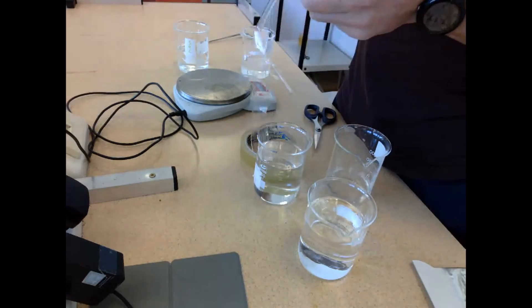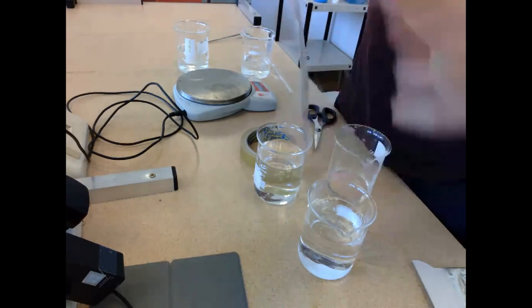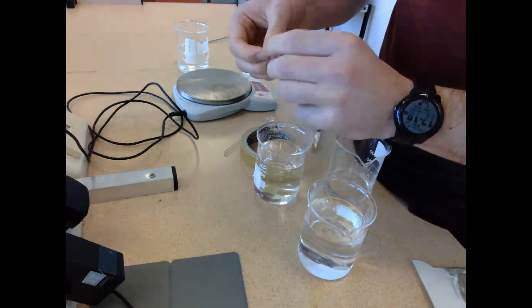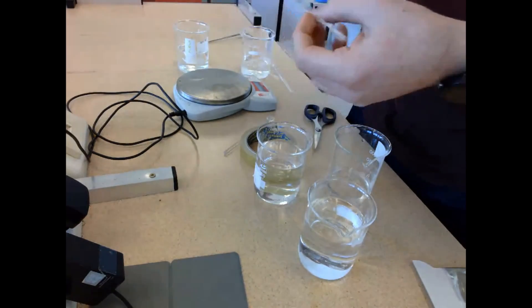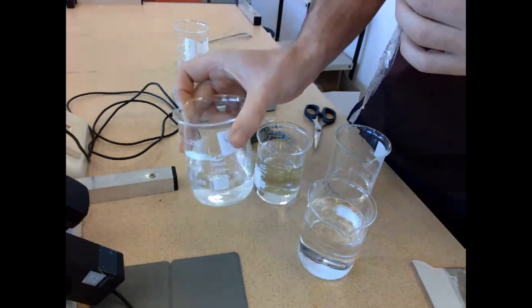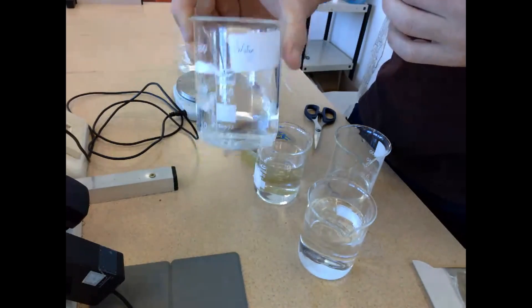This one here is going to be called visking tubing A. What I'm going to do is open up the end of it, put a glass stirrer down through it, open up the rest of it, then tie off one end really tightly to ensure no water is going to be able to seep out.